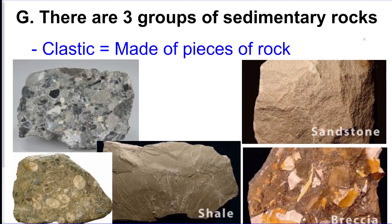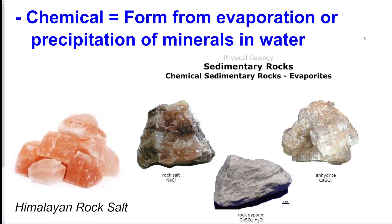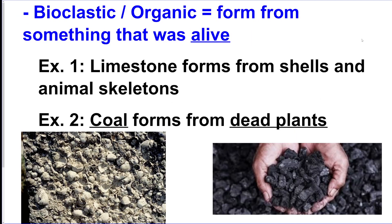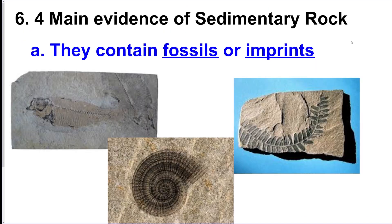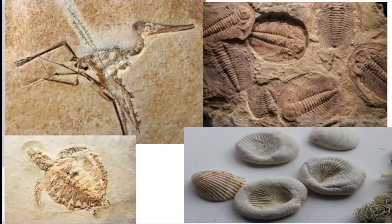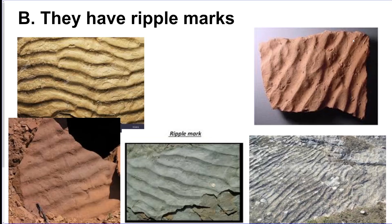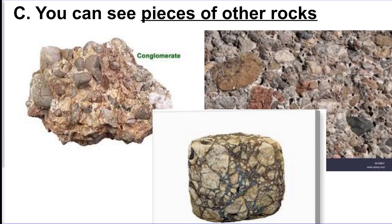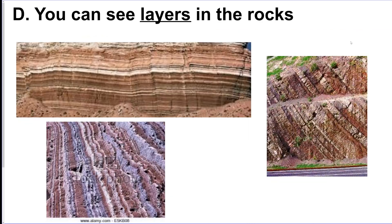There are three types of sedimentary rocks. The first is clastic, meaning it's made of pieces of other rocks. Then you have chemical, which is from mineral crystallization in water. And then bioclastic or organic, which formed from something that was once alive, like coal being from dead plants and limestone being from shells. To determine if something is sedimentary, look for fossils or imprints, ripple marks, pieces of other rocks in it, or layers in the rock.